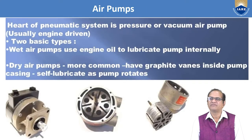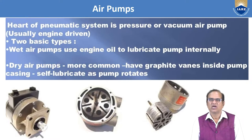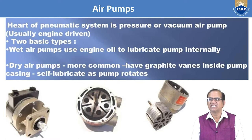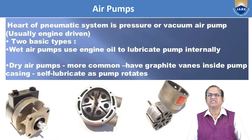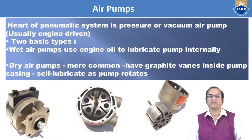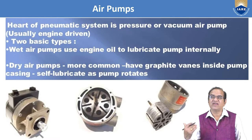The next component is the air pump. The heart of the pneumatic system is the pressure or vacuum air pump, usually engine-driven. There are two basic types: the wet air pump, which uses engine oil to lubricate the pump internally, and the dry air pump, which is more common and has graphite vanes inside the pump casing that are self-lubricating as the pump rotates.